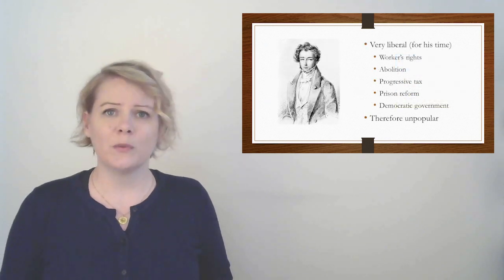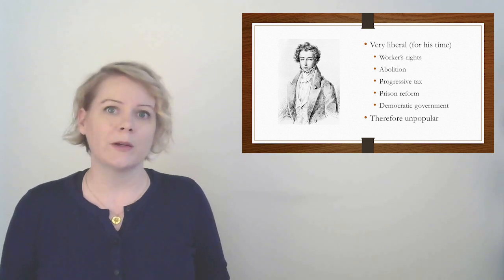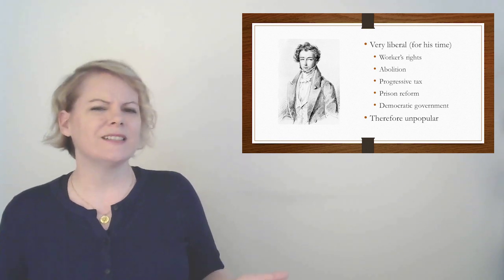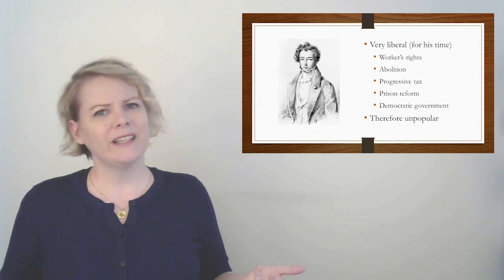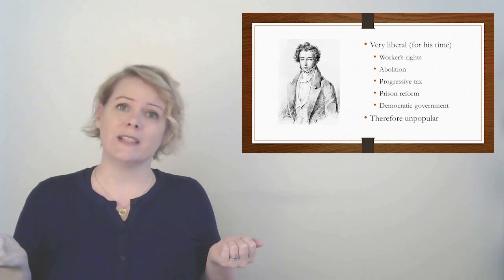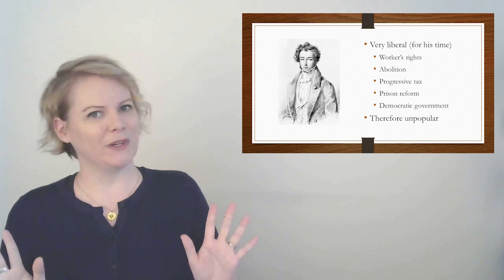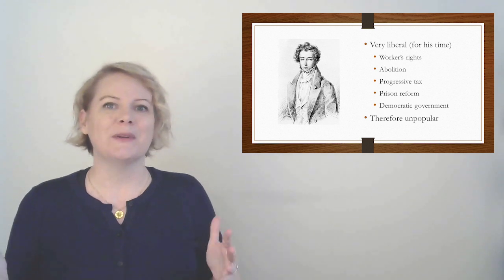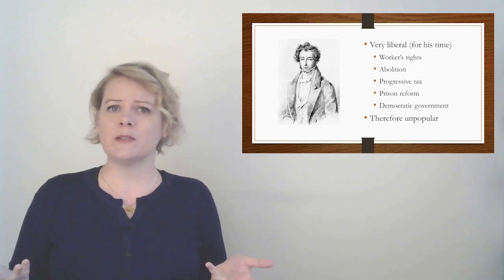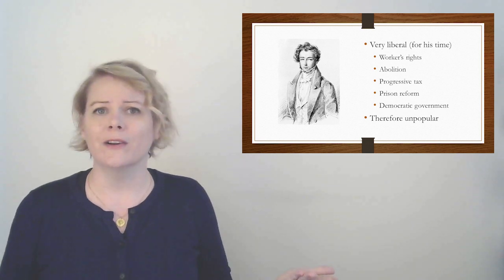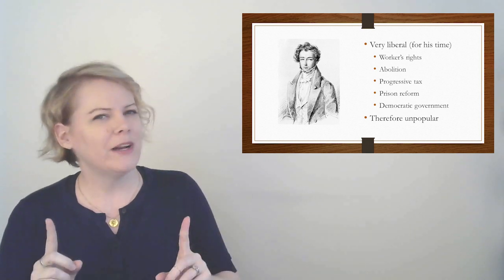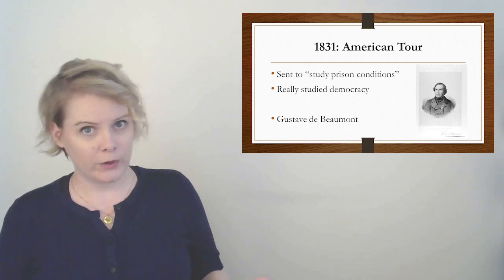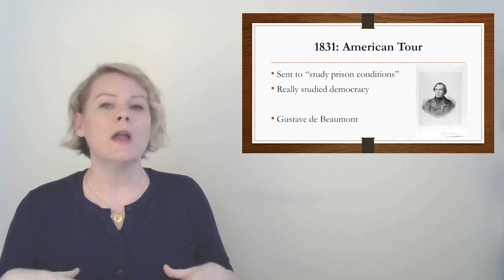The bourgeoisie king who was in charge at the time didn't really care for him, and neither did a lot of the conservative members of the Parliament. Here is a small list of things that Tocqueville was interested in, and things that he was writing about and making speeches about. Workers' rights? Abolition of slavery? Progressive taxes? Prison reform? Democracy? I mean, he would be left-wing even today. So you can imagine how that was pretty left-wing for French Parliament under a monarchy in the early 1800s. So basically what happened was they were like, you know, Tocqueville, you make a lot of great points, but maybe you should go somewhere else for a while and leave us alone.